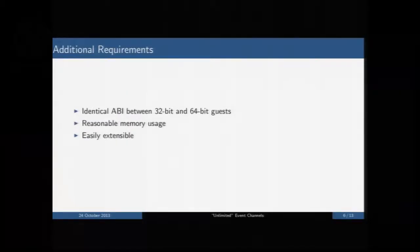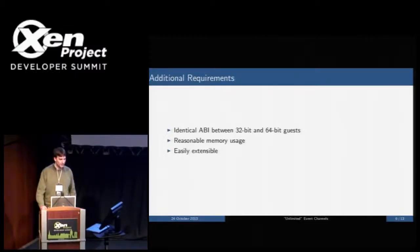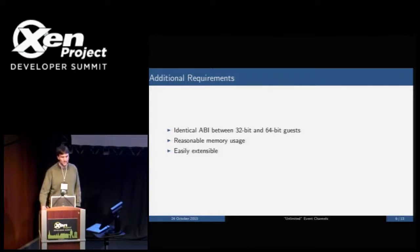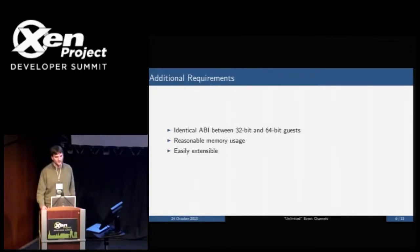We also have additional requirements for a new ABI. We'd like the ABI to be the same for 32-bit and 64-bit guests, because different ABIs create extra complexity in the hypervisor. We also want to avoid excessive memory usage, since each piece of shared memory between Xen uses up a limited set of global shared mapping space. And we'd like an ABI that could be extended in the future for even more or potentially other use cases.